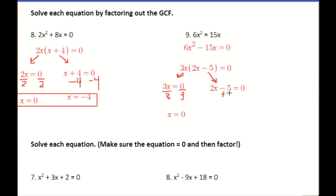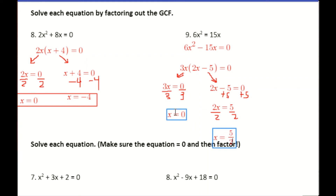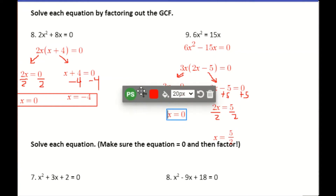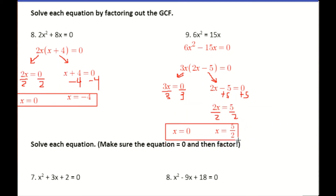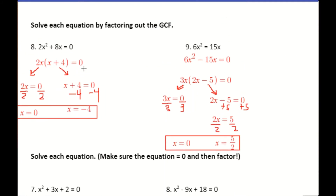For the second factor 2x minus 5 equals zero, we add 5 to both sides to get 2x equals 5, then divide both sides by 2. We get a fraction: x equals 5 halves, which is exactly 2.5 as a decimal. So our two solutions are x equals 0 and x equals 5 halves.